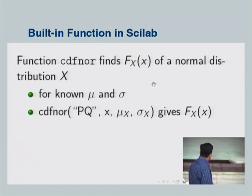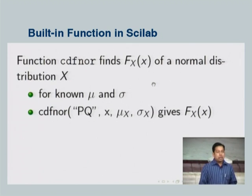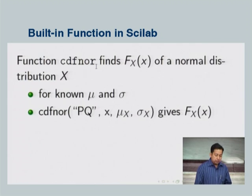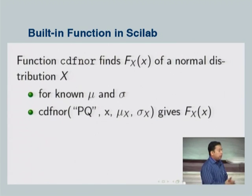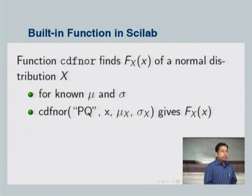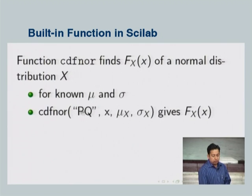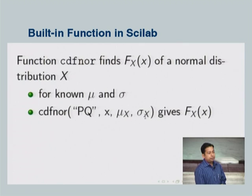Now we come to Scilab. The function to find the CDF of the normal random variable is cdfnor — it finds the CDF of any normal random variable with any mu and any standard deviation. The format is: cdfnor, then within quotes 'PQ', then the value at which you are finding the CDF, then the mean, then the standard deviation.